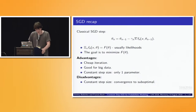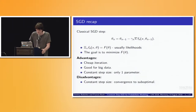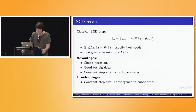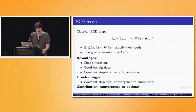We choose constant step size SGD because firstly it is cheap and hence suitable for big datasets, and secondly it is easy to tune — only one parameter, the step size, instead of tuning two parameters: a step constant and a decaying power. The main disadvantage of constant step size SGD is that it converges only to some neighborhood of the solution. In this talk I will introduce a different kind of averaging to converge to the optimal solution.